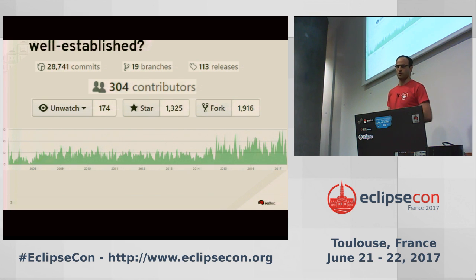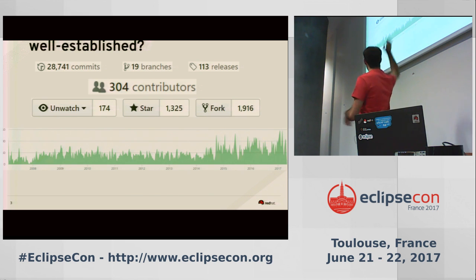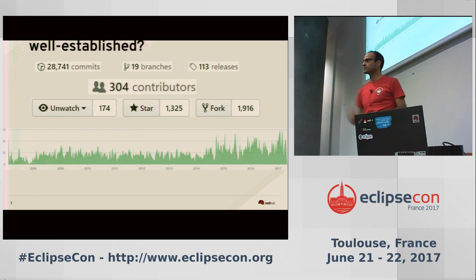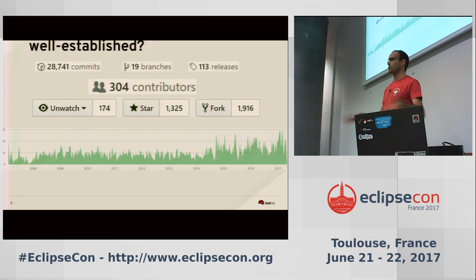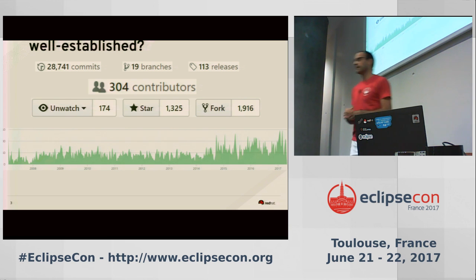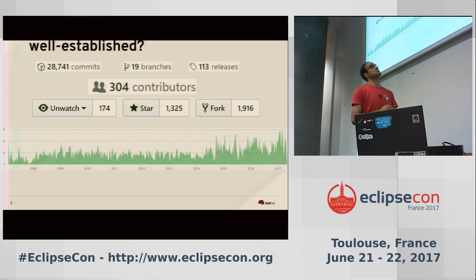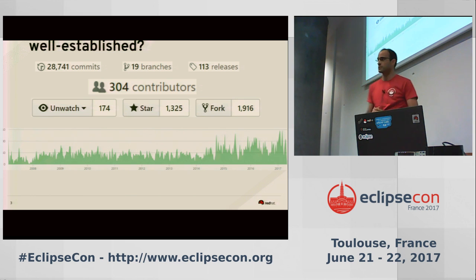Apache Camel is open source and is the most used open source framework in the classical integration world. There are more than 200 different contributors, it is a 10-year-old project with a lot of experience, and we can see that it is even more active in the last years.